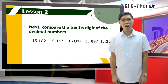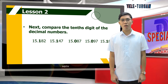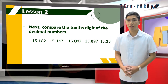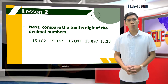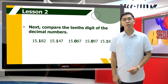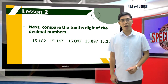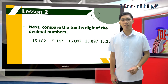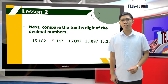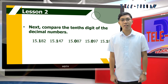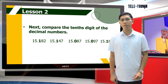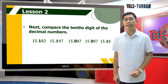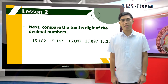Next, compare the tenths digit of the decimal numbers. As observed, zero is less than one. Thus, fifteen and one hundred eighty-two thousandths, fifteen and one hundred forty-seven thousandths, and fifteen and eighteen hundredths are greater than the two decimal numbers, fifteen and eighty-seven thousandths, and fifteen and ninety-seven thousandths.